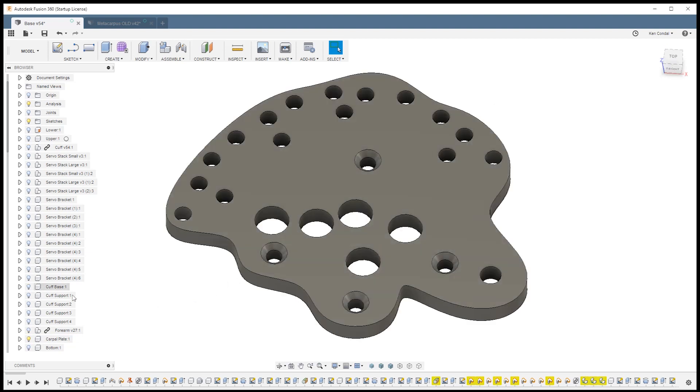If we take a closer look, this is what the part looks like. It has lots of holes which are used to mount the fingers and all of the pistons that make the fingers bend. And then these countersunk holes here are what connect it to the forearm.